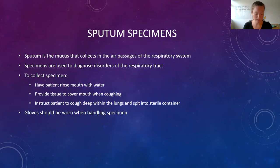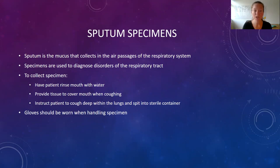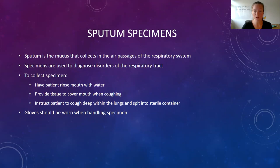Let's talk about sputum specimens. Sputum is mucus — that's the material we cough up from the very bottom of our lungs. It's used in diagnosing a variety of respiratory tract infections and identifying the specific microorganisms making us sick. There is a proper process to get a specimen that's not contaminated: first, have your patient rinse out their mouth with water, gargle, swish, and spit. Give them a tissue to cover their mouth while coughing to prevent contamination, and instruct them to produce a deep cough from the bottom of their lungs and spit that into the specimen container.